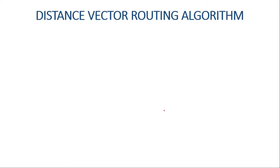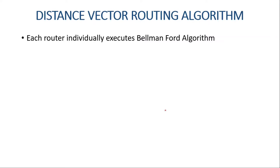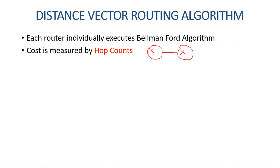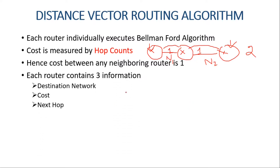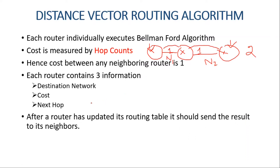Moving on to the distance vector routing algorithm: each router individually executes the Bellman-Ford algorithm. The cost is measured by hop counts — the number of networks a packet has traversed. For example, if a packet travels through network one and network two, the hop count is two. The cost between any two neighbors is placed as one. Each router needs to contain three pieces of information: destination network, cost, and the next hop. After a router updates its routing table, it sends the result to its neighbors so they can update their tables.